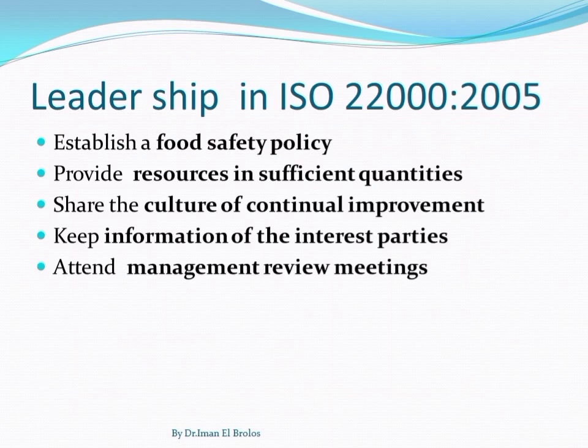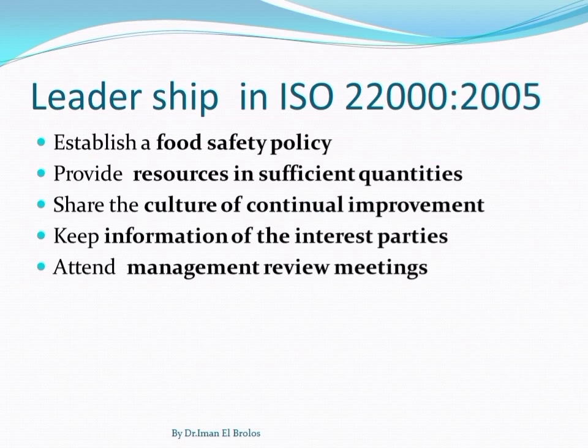The old version already outlined examples for top management leadership inside the food safety management system, including: establish the food safety policy, provide sufficient resources, share the culture of continual improvement, communicate with interested parties, attend management reviews, and appoint the food safety team leader.